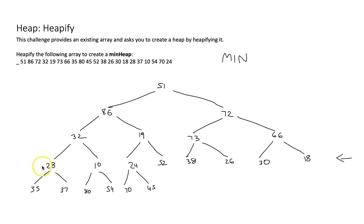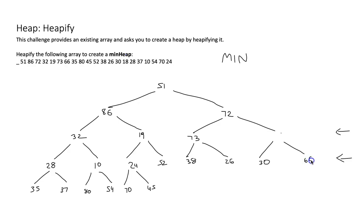I've reached the end of that level, so I go up one level. I give myself another arrow to indicate the new level. 66, given it's a min-heap, should be less or equal than the children — that is not the case. The smallest child is 18, so 66 sinks and 18 comes up. Next: 73 is not less or equal than both children. The smallest child is 26, so 73 sinks and 26 comes up.